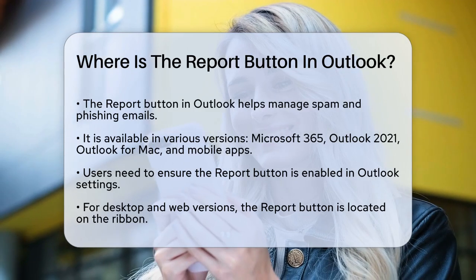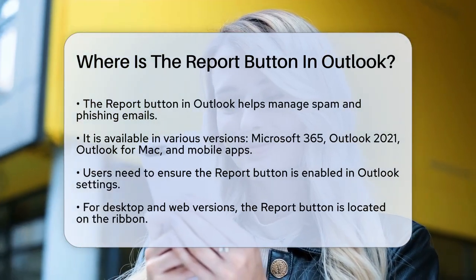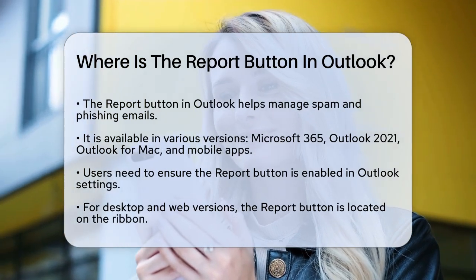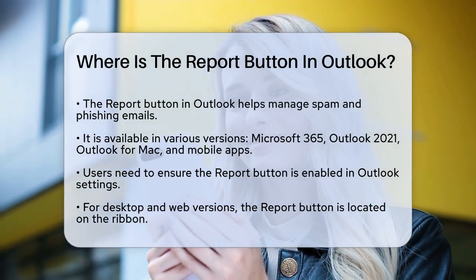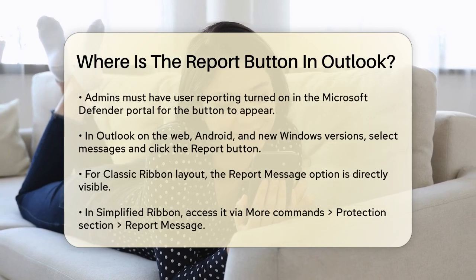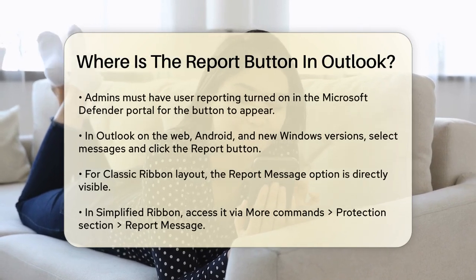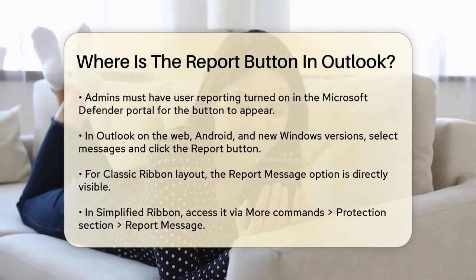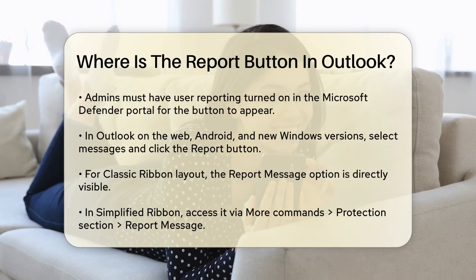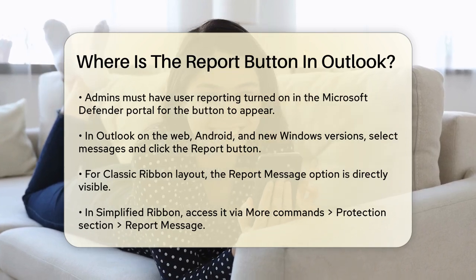To check if the Report button is available, look at the top of your Outlook interface. If you're using the desktop version or Outlook on the web, you should see the Report button on the ribbon. For this to work, your admin needs to have user reporting turned on in the user-reported settings, which can be configured at the Microsoft Defender portal.